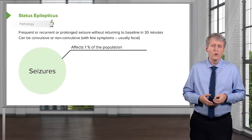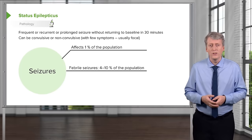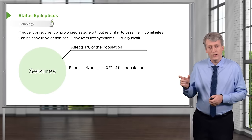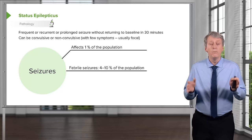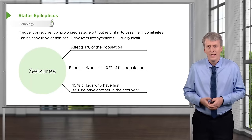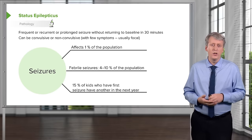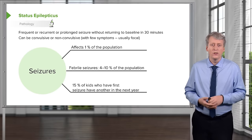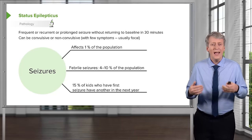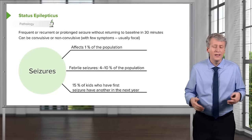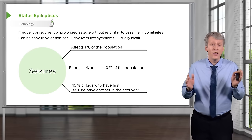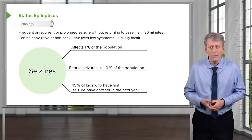Seizures in general affect about 1% of the population, but febrile seizures affect a much larger part of the population — 4–10% of children. And 15% of children who have a first seizure have another within the next year. Recurrence actually isn't that common, at least not right away. Many children have one seizure and never have another, and we never know why it happened.